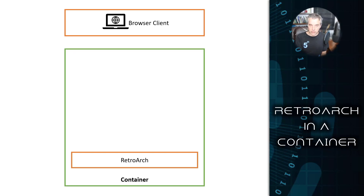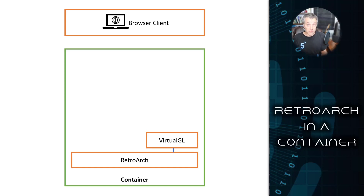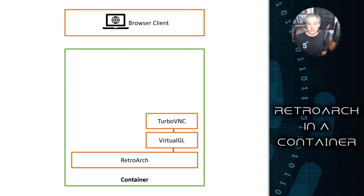There are two stacks — one for audio and one for video. On the video side, we have VirtualGL, which is basically an implementation of OpenGL that allows us to have OpenGL without a graphics card present. So I can run OpenGL applications and render everything in software, and then output that in a way that is headless or without hardware dependencies. With VirtualGL, I can write the output to something like VNC — in this case, TurboVNC, which is an implementation of VNC that works with VirtualGL.